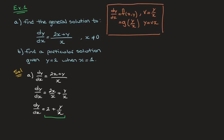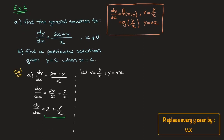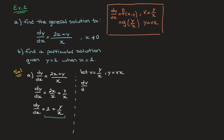Now that we know that, we go ahead and define our new variable v. We let v equal to y over x, which in turn means that y equals v times x. To write this equation in terms of v and x, we need to replace dy/dx by the derivative of v times x. And for that we'll use the product rule. In other words, dy/dx becomes dv/dx times x plus v times the derivative of x, which is just one. And that's equal to 2 plus y over x, which is v.